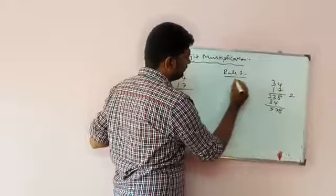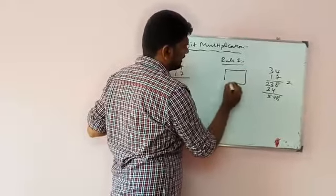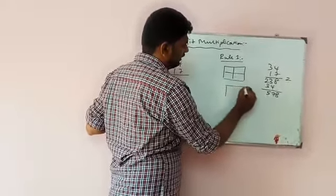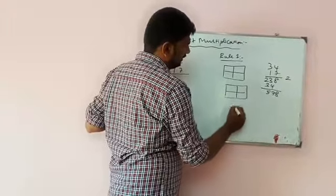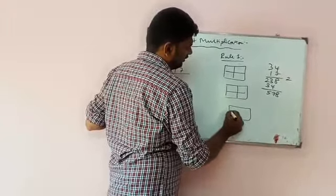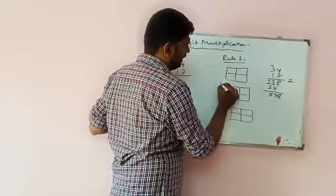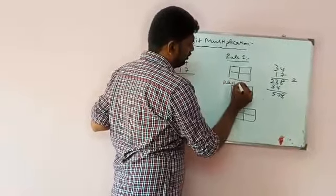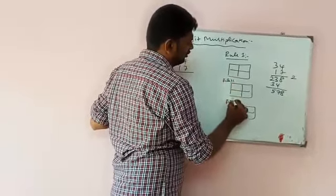This is a structure of two-digit number. Rule one and rule two, rule three.